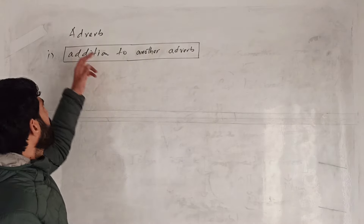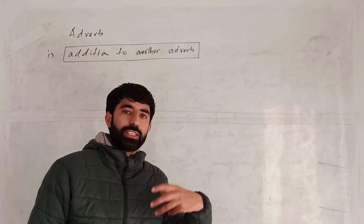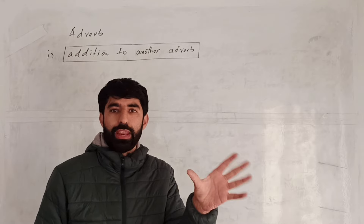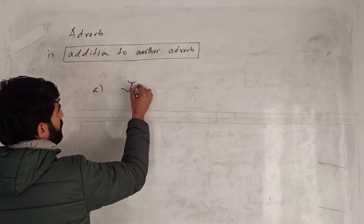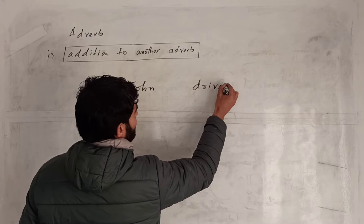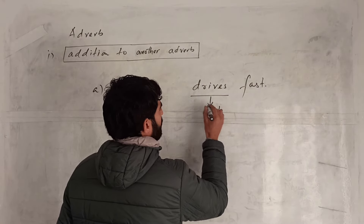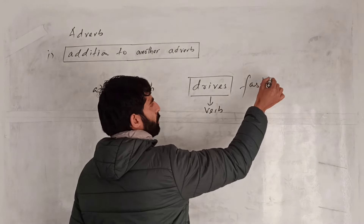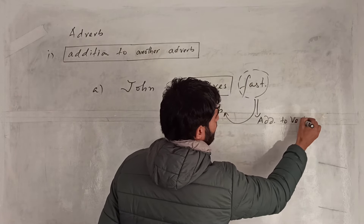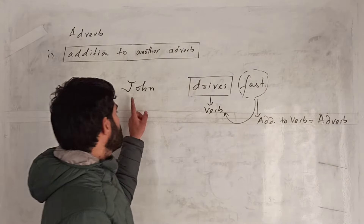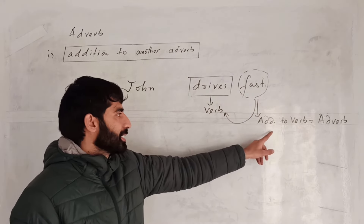Now the last function: adverb as an addition to another adverb. In this case, we already have an adverb in the sentence, and one more word comes and attaches itself with that adverb. For example, 'John drives fast' — drives is verb, fast is an addition to verb, so fast is an adverb.